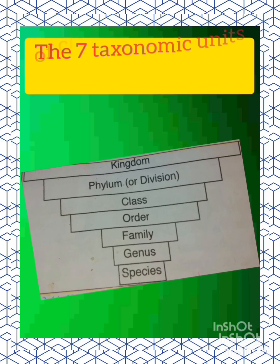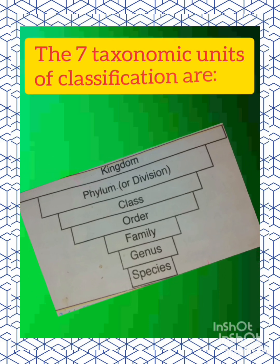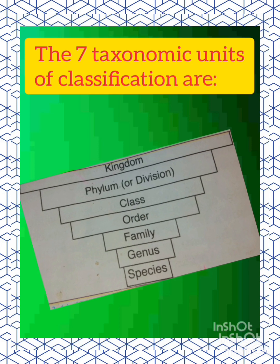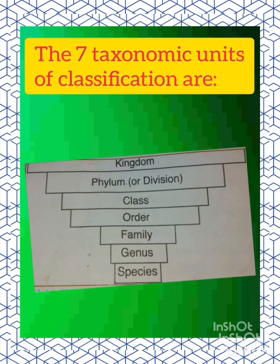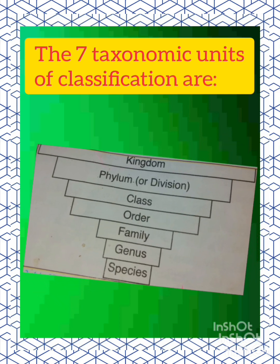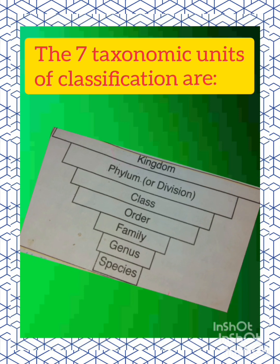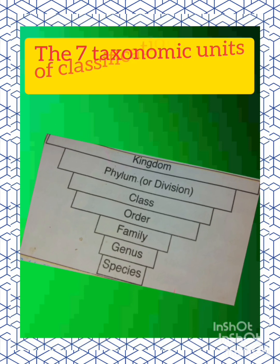The seven taxonomic units of classification are: kingdom; phylum in animals or division in plants; class; order; family; genus; and the smallest one is species.